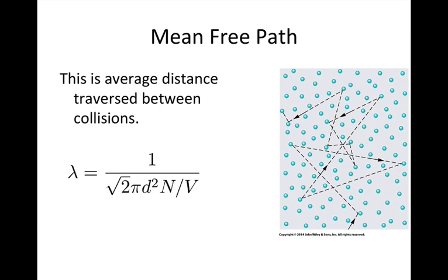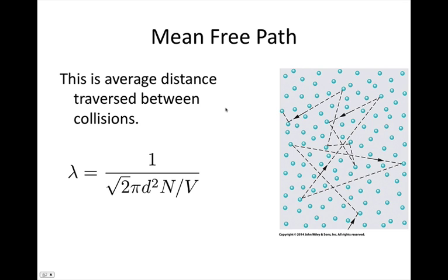So what we're going to consider now is the mean free path. The mean free path of a molecule is actually the average distance it traverses between collisions. We've kind of been ignoring this a bit in the past.